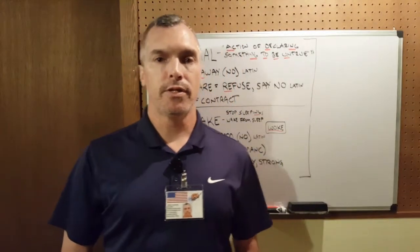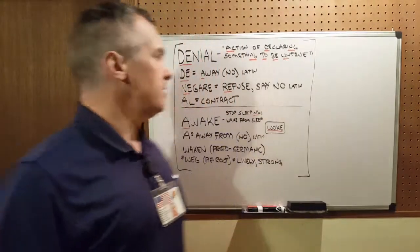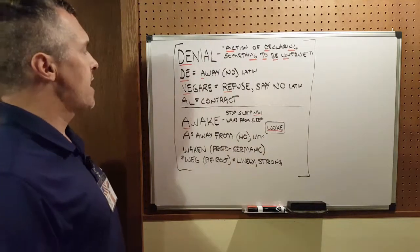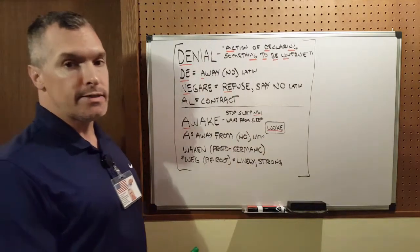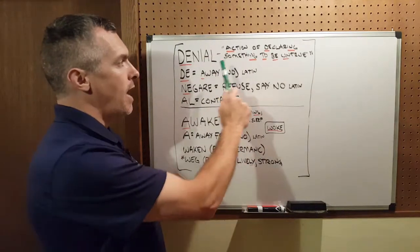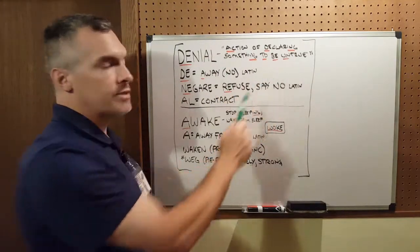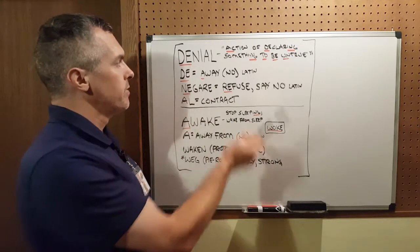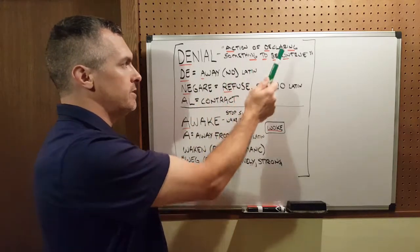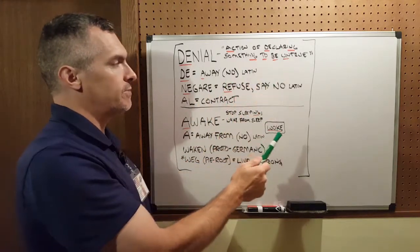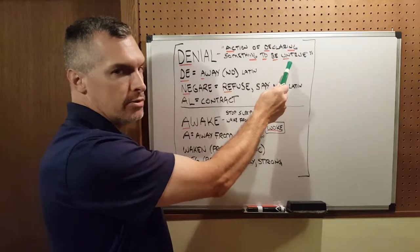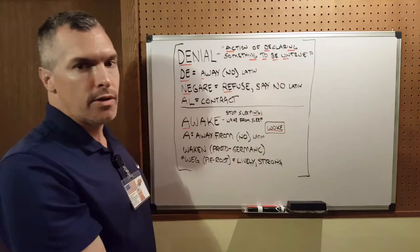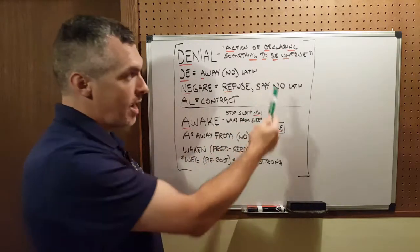Today I'm going to parse two new words, the first of which is denial, which Google defines as the action of declaring something to be untrue. So denial is an action, and it's a declaration of something to be not true.